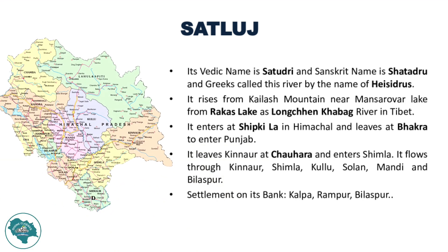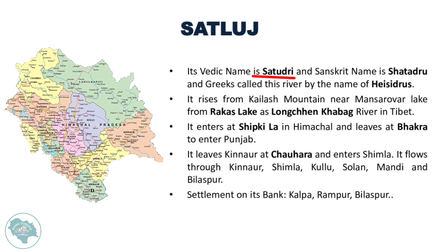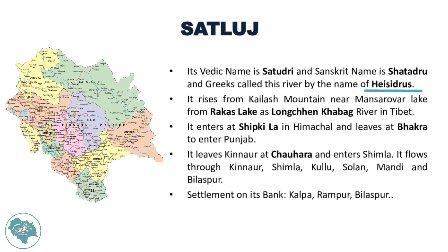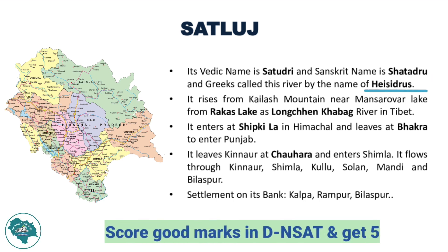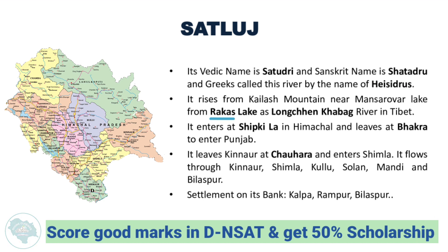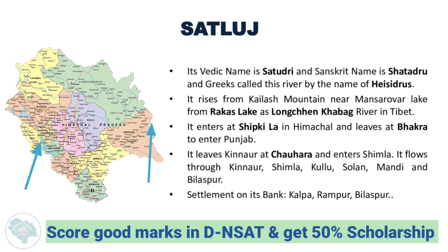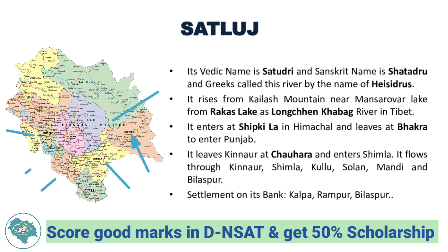Now we talk about Satlaj. Its Vedic name is Satudri and Sanskrit name is Shatadru. The Greeks called this river Hesedrus. It rises from Kailash Mountain near Mansarovar Lake, from Rakas Lake, as the Longchand Khabab River in Tibet. It enters Himachal at Shipkila and leaves at Bhakra to enter Punjab. It leaves Kinnaur at Chohara and enters Shimla, flowing through Kinnaur, Shimla, Kullu, Solan, Mandi, and Bilaspur.